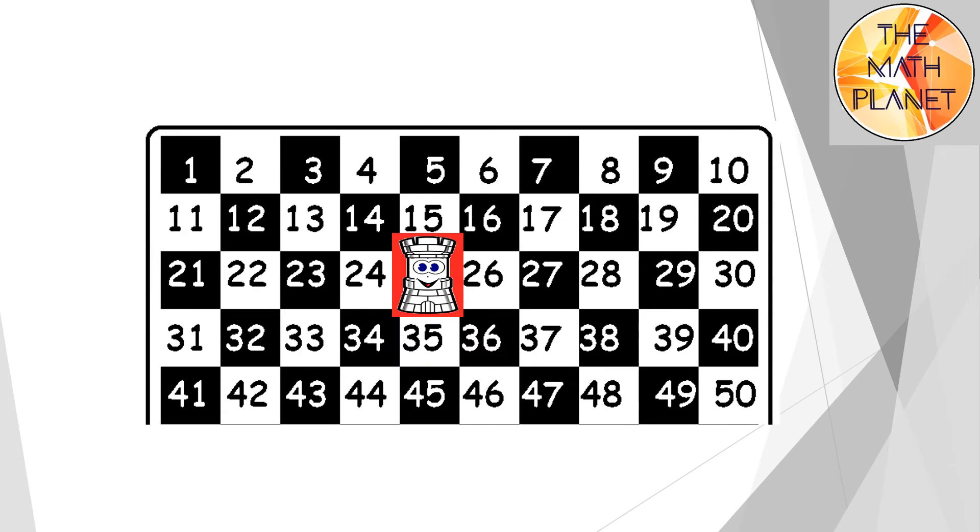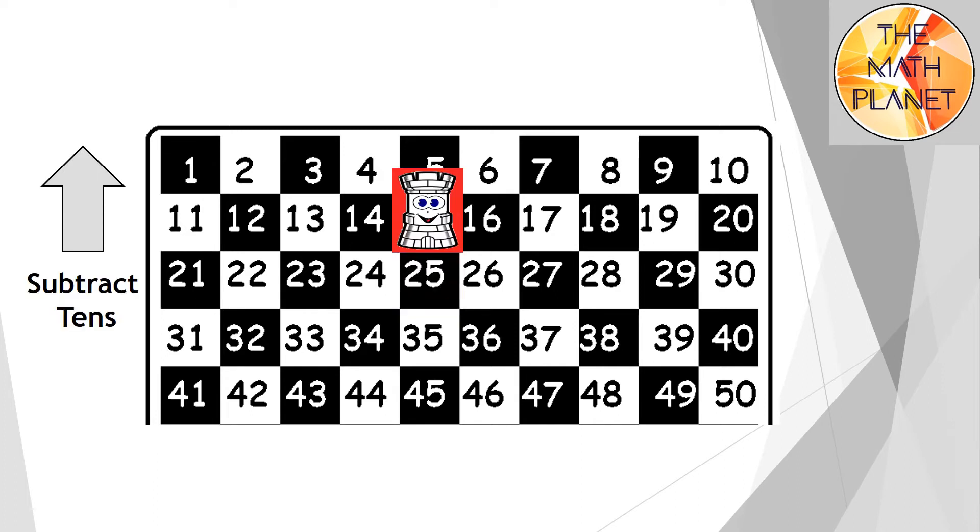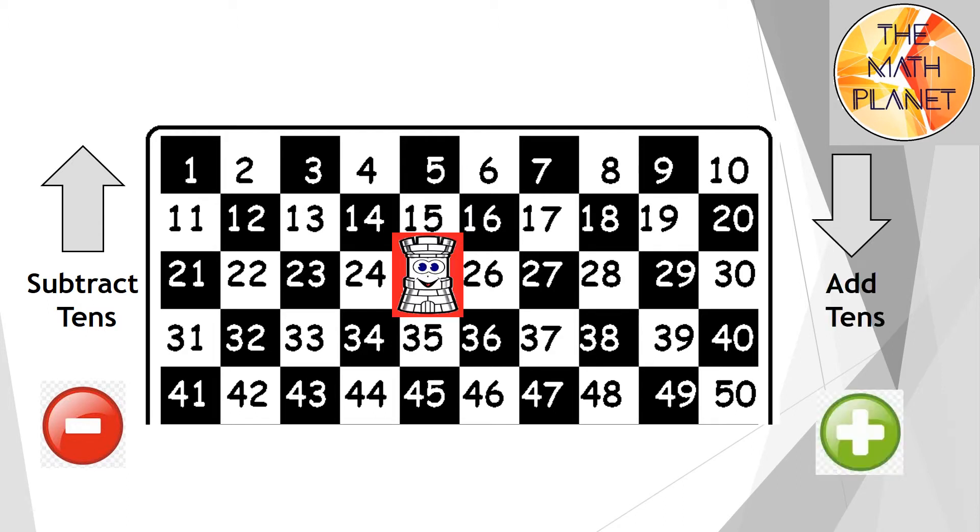Here am I and here's part of the hundred chart. What will happen if I move up? If I move up the chart, I subtract tens or perform a minus operation. While if I move down the chart, I add tens or perform an addition operation, which we need for today's lesson.